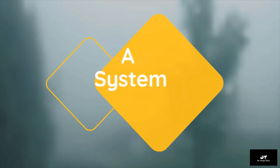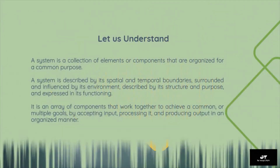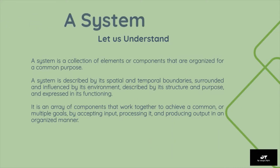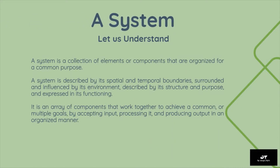Let us understand what is a system. A system is a collection of elements or components that are organized for a common purpose. It is described by its spatial and temporal boundaries, surrounded and influenced by its environment, described by its structure and purpose, and expressed in its functioning. It is an array of components that work together to achieve a common or multiple goals, by accepting input, processing it, and producing output in an organized manner.